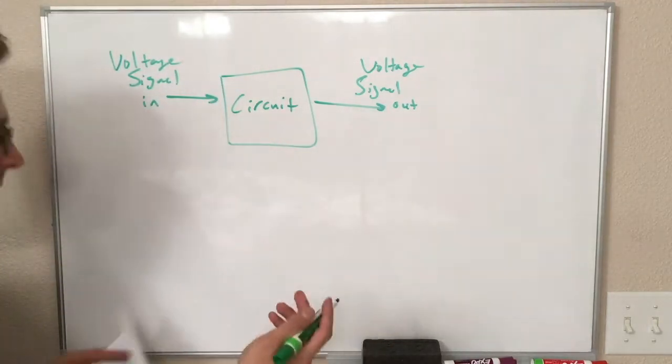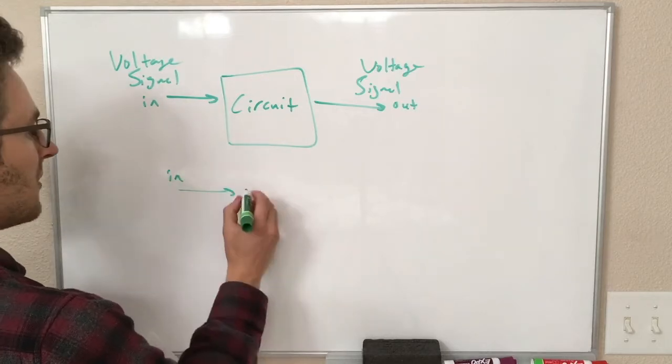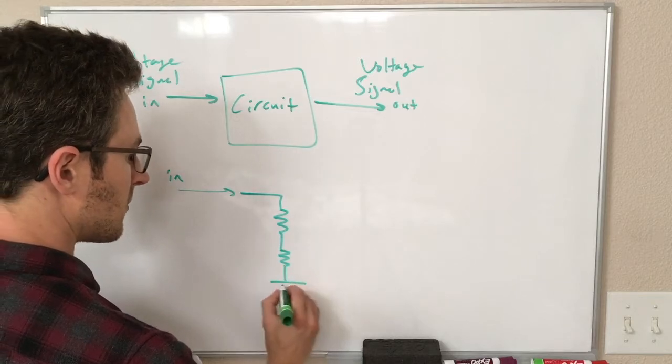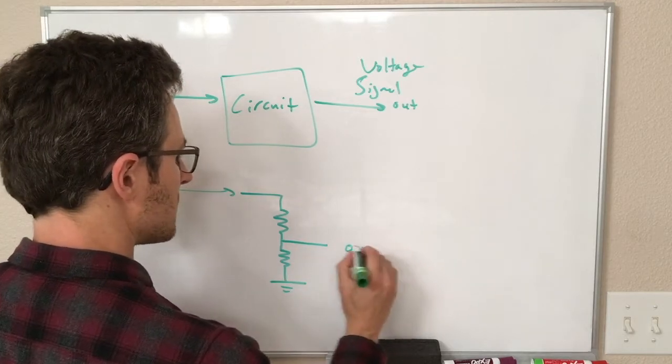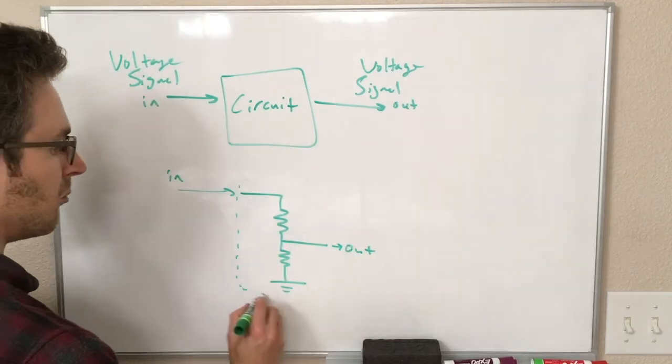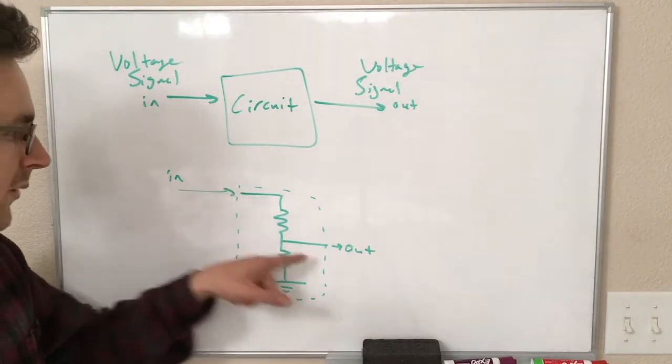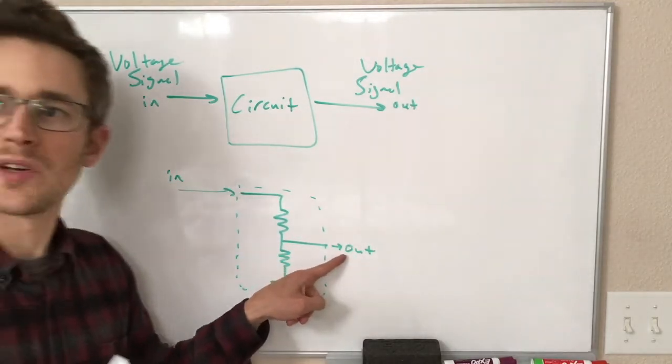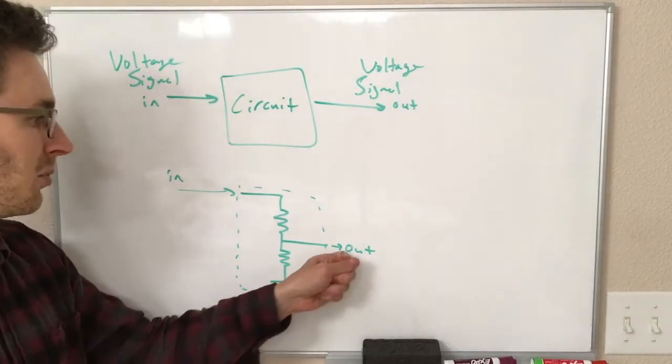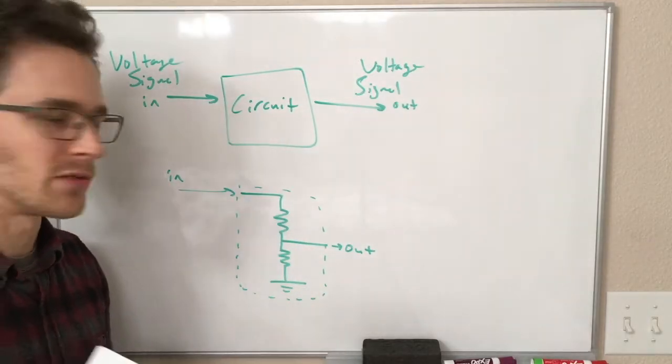Let's do one silly kind of trivial example. If we have a signal in that we are applying to a circuit that looks like this, and this is our signal out, we can kind of imagine drawing a little black box around this thing. We're putting some voltage into this wire, and we're measuring some voltage on this wire. We know exactly what to expect for this. This is a voltage divider, so our output is just going to be some fraction of the input that is determined by what those resistor values are.